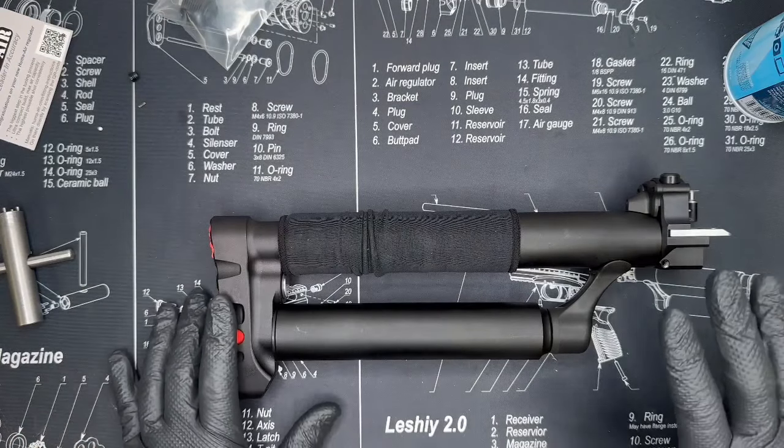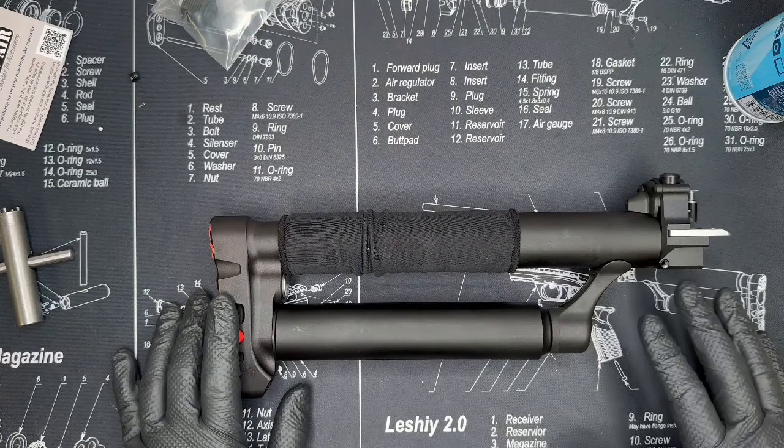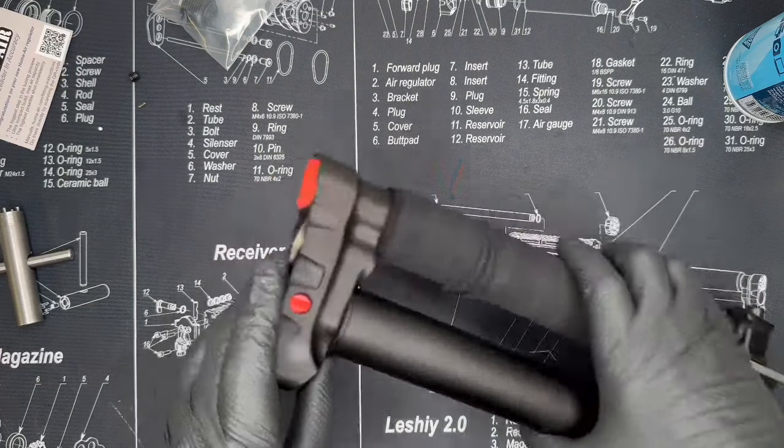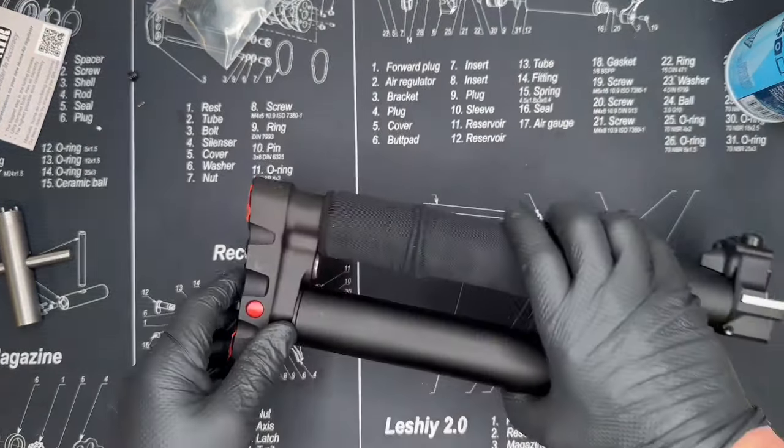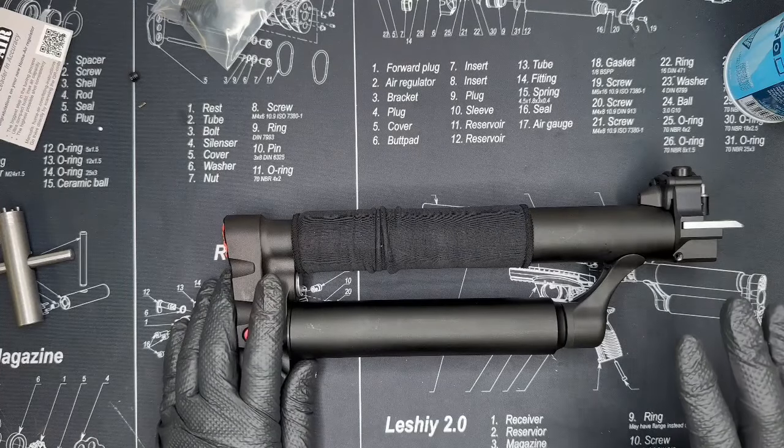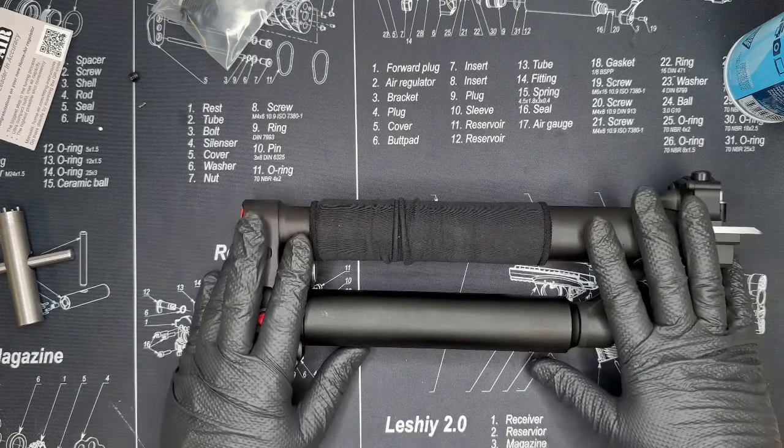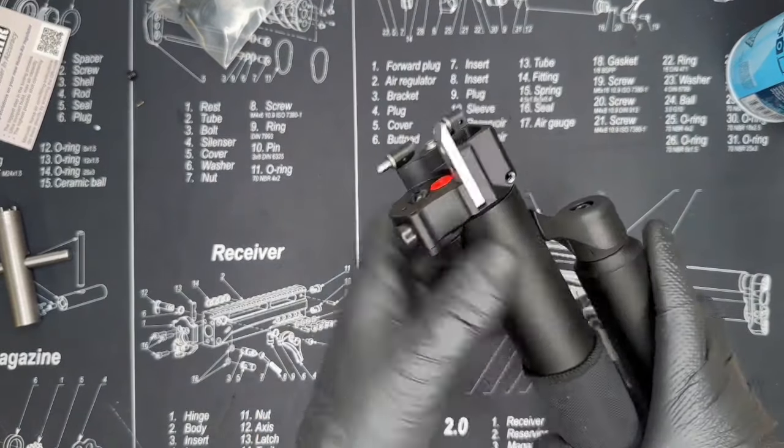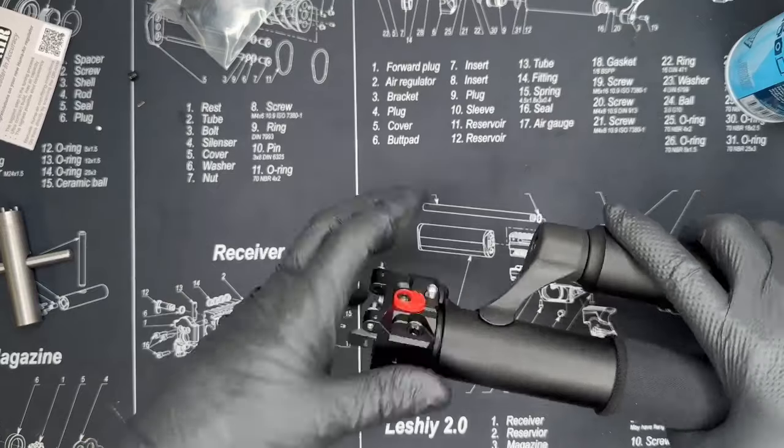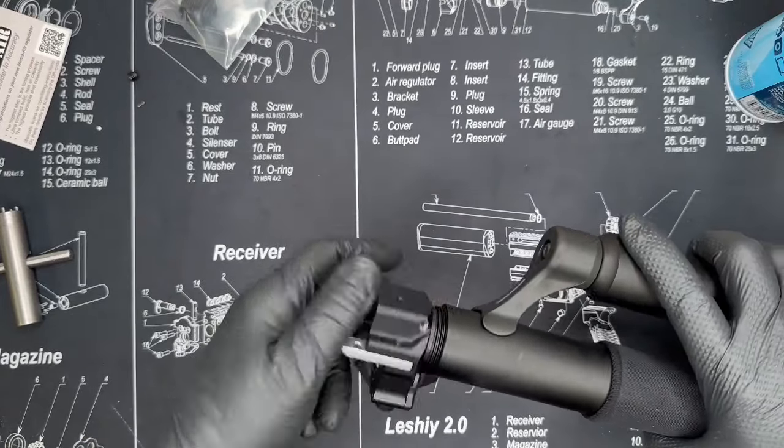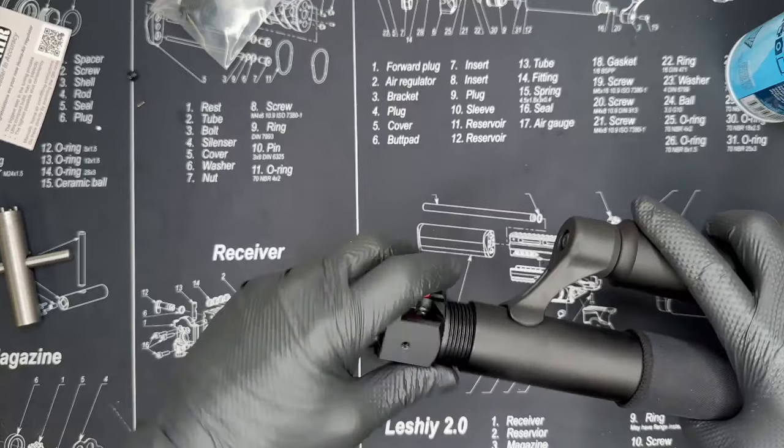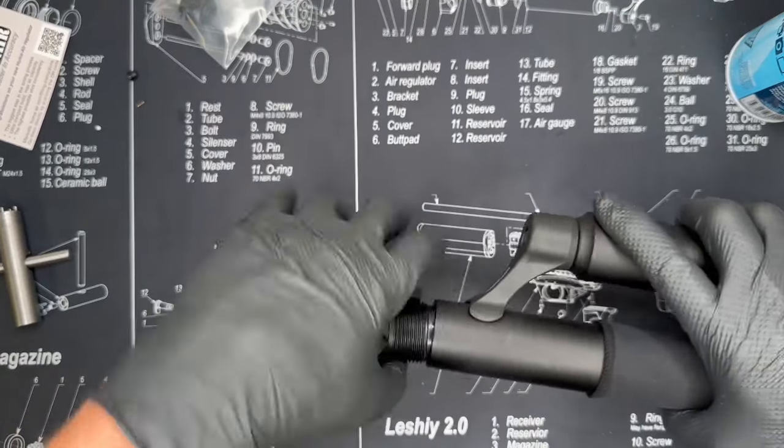Before we start, I'm going to make sure that we're safe. Remember that working with high pressure parts can be dangerous. You want to ensure that your buttstock is fully empty and you're wearing proper eye protection and gloves if needed. First thing we're going to do is remove the regulator and plenum from the buttstock to ensure we don't have any pressure in here.